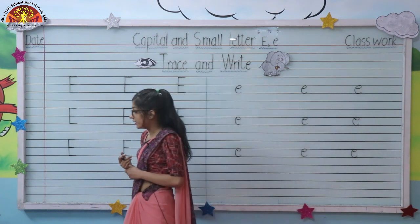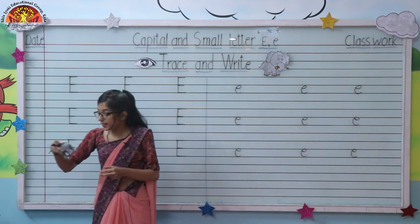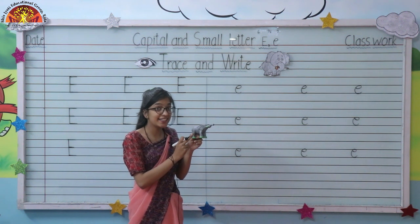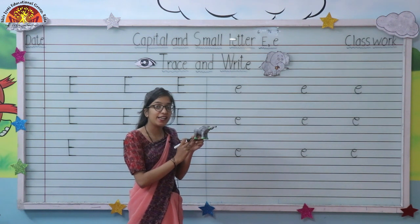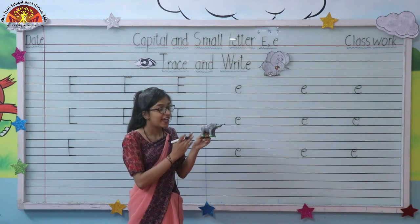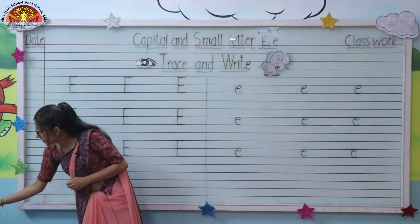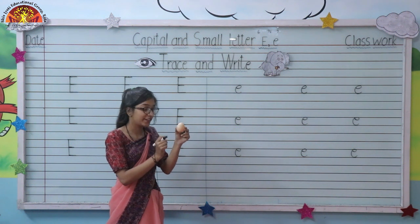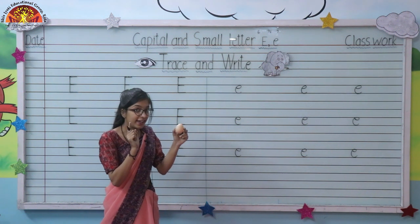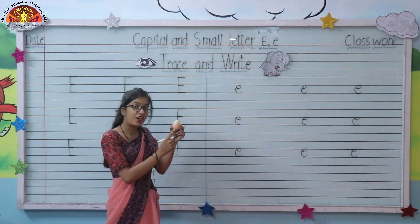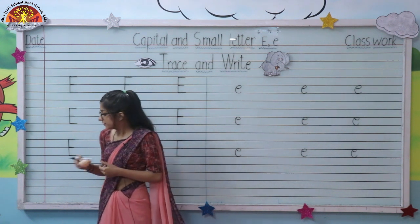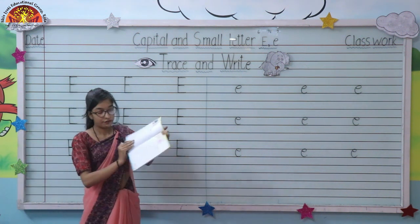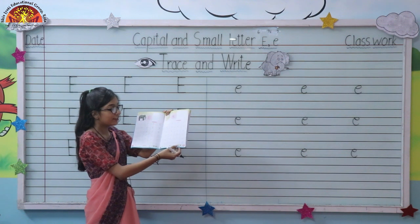Now let's see some objects related to this letter. Tell me which animal is this? This is an elephant — E for elephant. One more: what is this? This is an egg — E for egg. You have to complete page number 14 and 15.